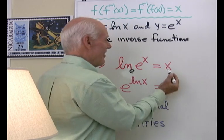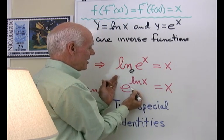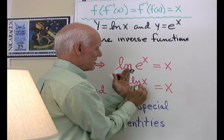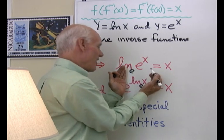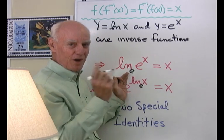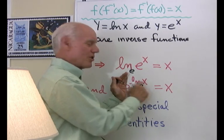So that's why this is x right here. This number is the exponent I need on e to get x. It's a specific exponent, the one I need to put on e in order to get x.